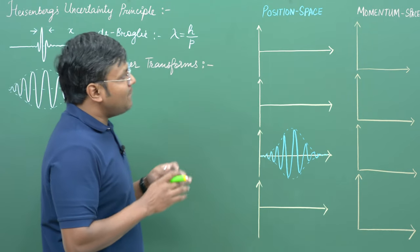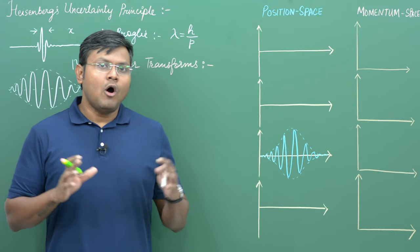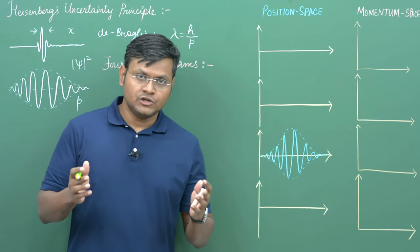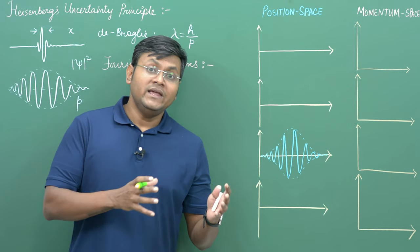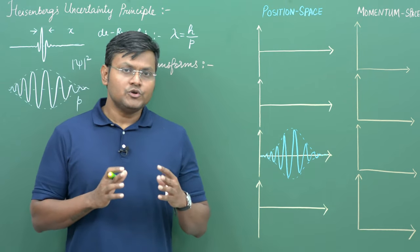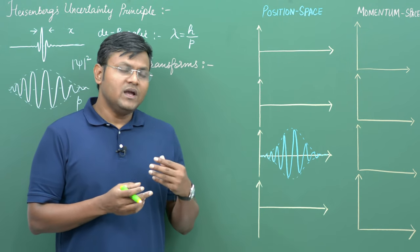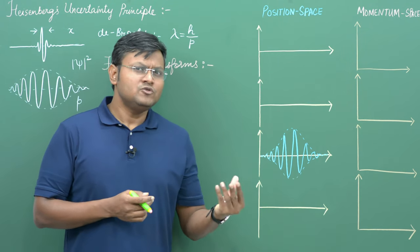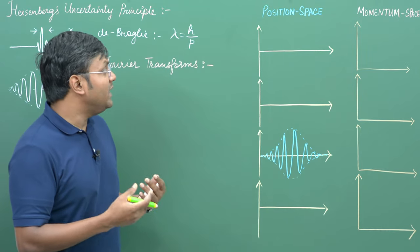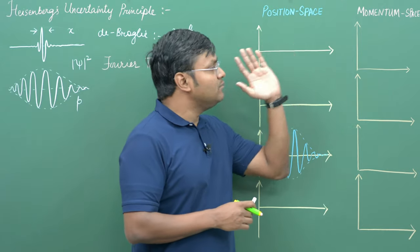Fourier transform is a mathematical technique in which we can convert a signal or a function from one domain into another. Usually Fourier transforms are done in signal processing where we convert a signal from a time domain to a frequency domain. But in our case, we are going to make transformations between position domain and momentum domain.